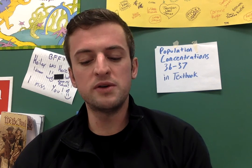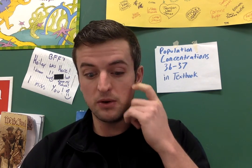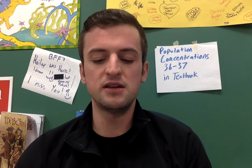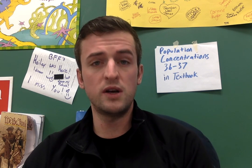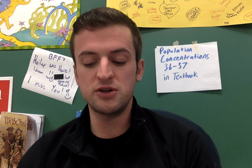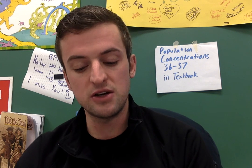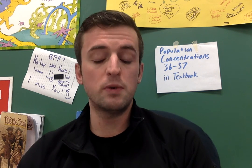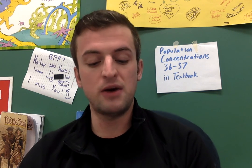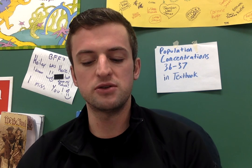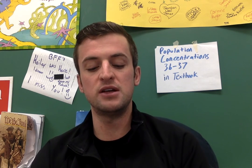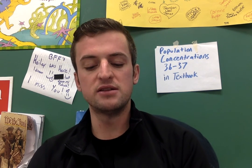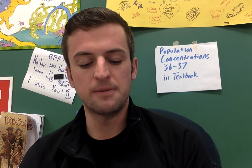Where in the world does this section of the book talk most about? According to the text, about two-thirds of the world's inhabitants are clustered in four regions: Europe, East Asia, South Asia, and Southeast Asia. The book contains a short paragraph about each region and how the populations are concentrated. This section also discusses where the population is not so clustered, specifically in cold lands, wetlands, highlands, and dry lands.